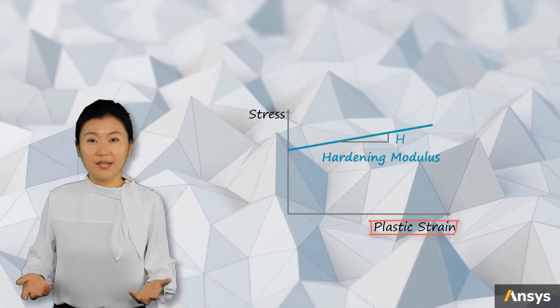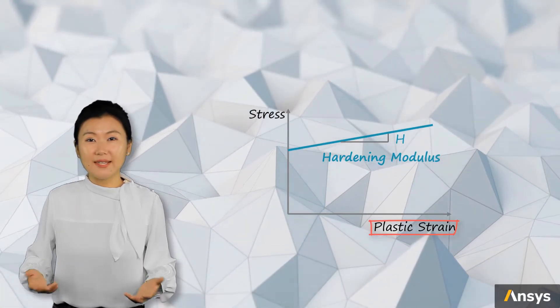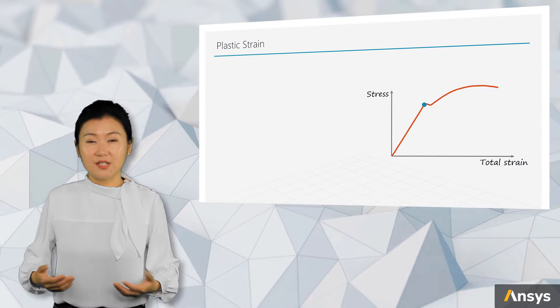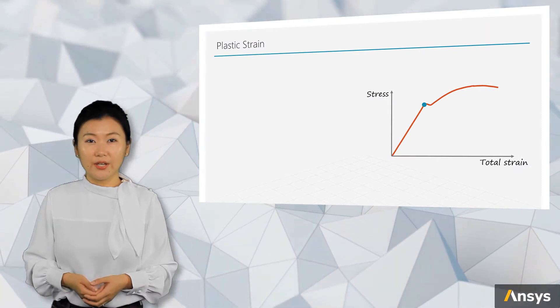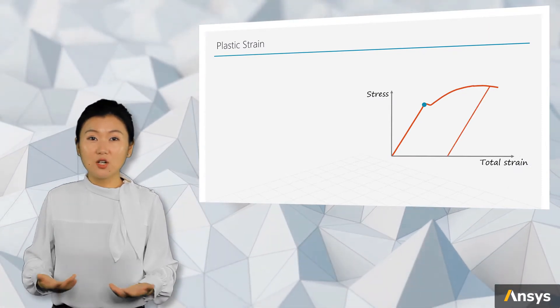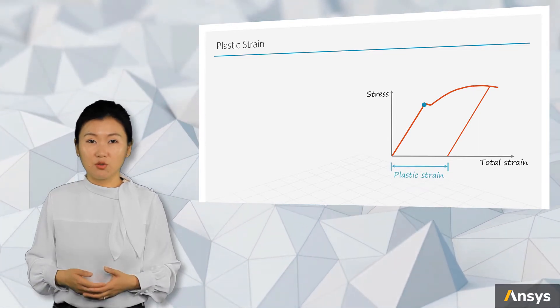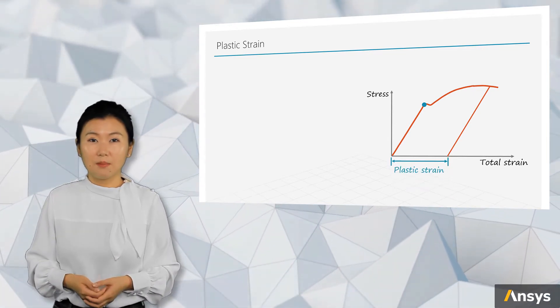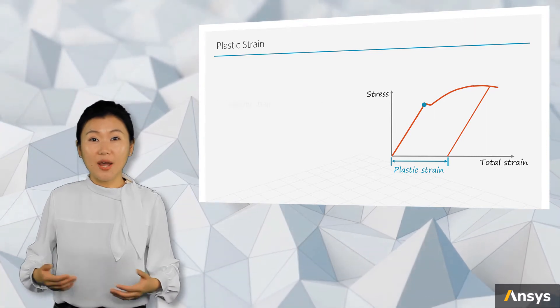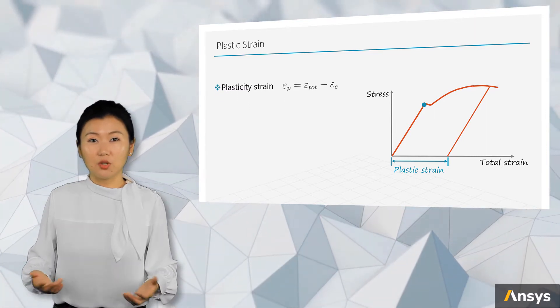To find hardening modulus H, we need to first find the plastic strain. Plastic strain is the residual strain. If we unload the material to zero stress, the elastic strain will be gone. What's left in the material is plastic strain. Basically, it can be found by subtracting the elastic strain from the total strain.